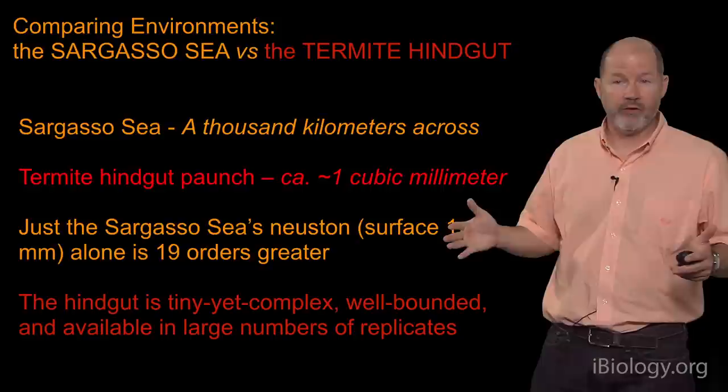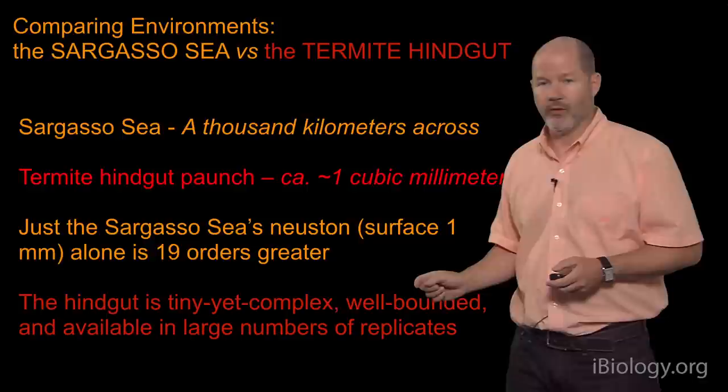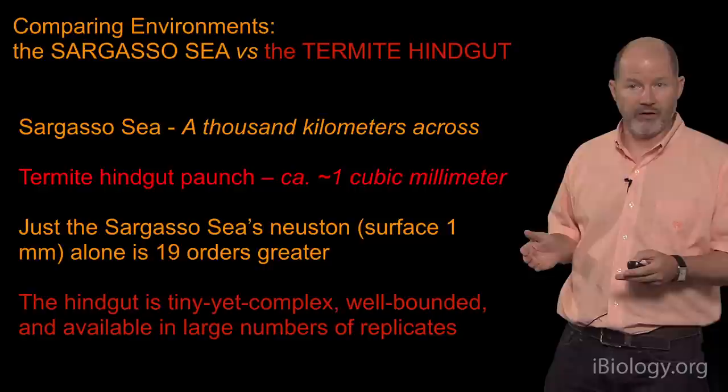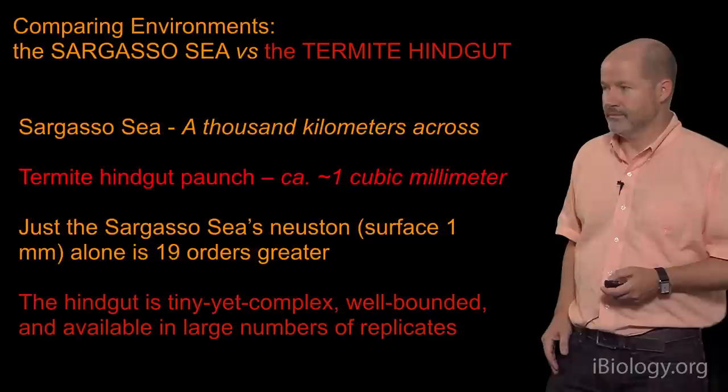The Sargasso Sea is wonderful, but there's only one of them and its boundaries are somewhat user-defined by intersecting currents, whereas in the insect the boundaries are very well-defined. Of course, the termite is available in large numbers of replicates, so we can have that one tiny, well-bounded environment replicated termite after termite. This allows us to do comparative studies and perturbation studies which are just not possible with a large environment like the Sargasso Sea.